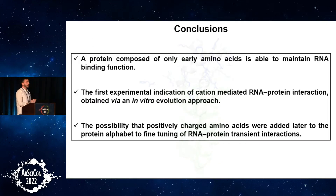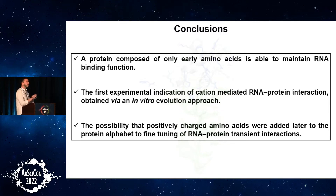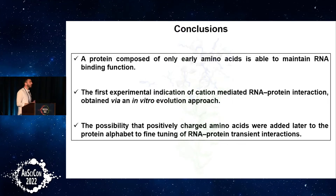In conclusion: first, we demonstrate that an early protein composed of only early amino acids is still able to bind RNA. Second, for the first time we provide experimental indication that cations like magnesium can genuinely help the interaction between RNA and protein — and this may also be possible in the modern world. Third, we can say that the prebiotic world without late amino acids was possible, and late amino acids were probably inserted during evolution to help fine-tune the RNA-protein interaction and make everything more dynamic. Even without them, RNA was still able to interact with protein.